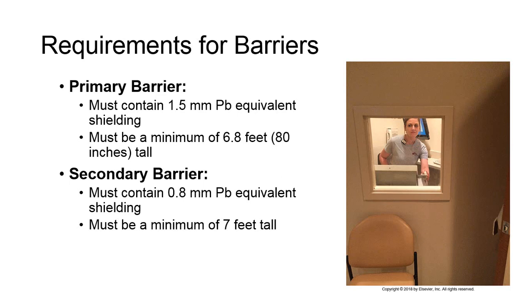In practice, any scatter reaching the operator behind the secondary barrier or the control booth must be scattered at least twice due to these safety regulations, and therefore would be extremely low energy by that point.